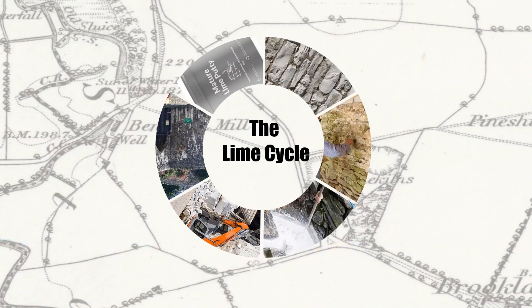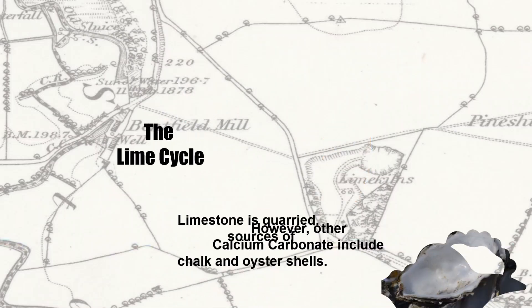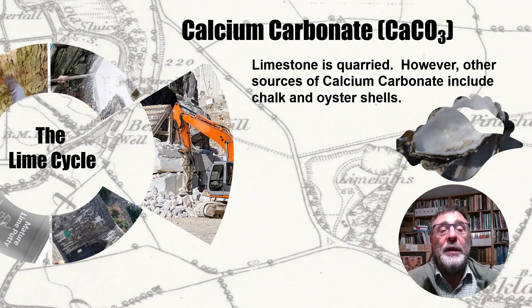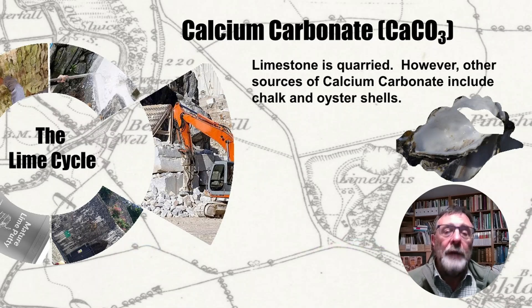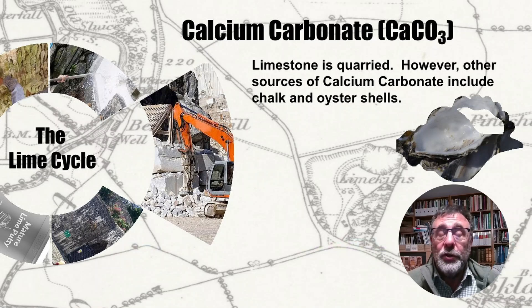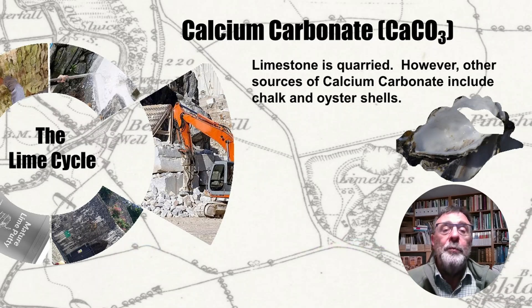This is part of the process often called the lime cycle. To understand this process, we need to go back to the very beginning. To create lime mortar or any lime-based products that we might use in building, we have to start with calcium carbonate. This is what we commonly refer to as limestone, but there are other sources of calcium carbonate that can include chalk and oyster shells. In fact, we've often found remnants of oyster shells in historic mortars, and on rare occasions eggshells as well.